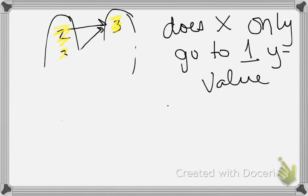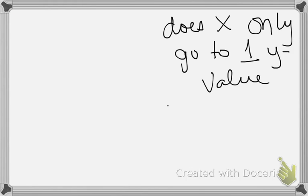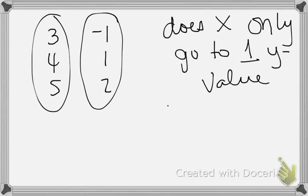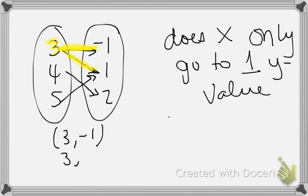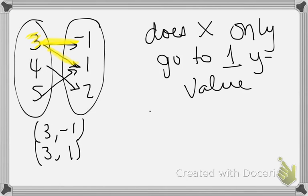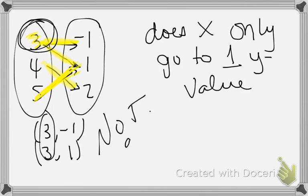Now let's look at a mapping diagram that's not a function. Say we have x values 3, 4, 5 and y values negative 1, 1, 2. If the x value 3 has arrows pointing to both negative 1 and 1, then 3 goes to two y values — so that x value repeats, and this is not a function. Even though 4 and 5 each go to only one y value, because one x value maps to two y values, the whole relation is not a function.